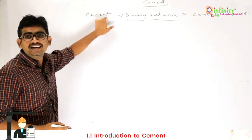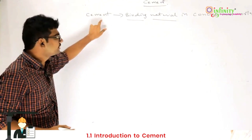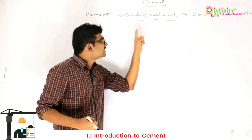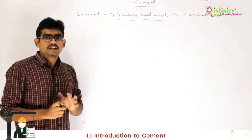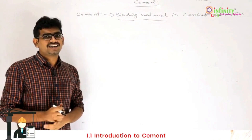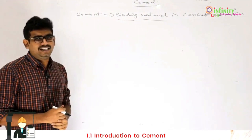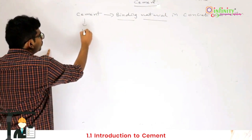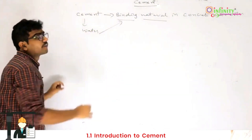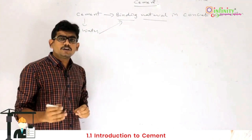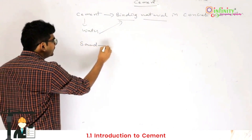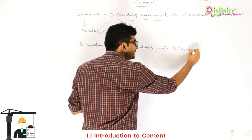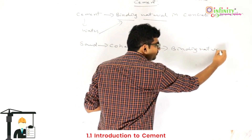How does cement get its binding nature? If you take sand and add water to it, sand does not behave like a binding material. But if you take clay and add water to it, clay behaves like a binding material. Similarly, if you take cement and add water, it also behaves like a binding material. Sand is cohesionless in nature, so it will not exhibit binding nature.